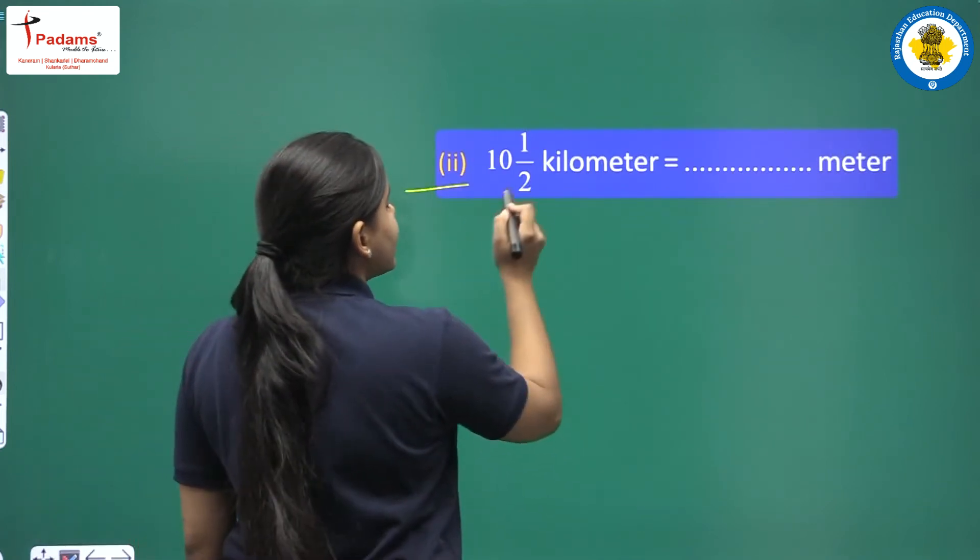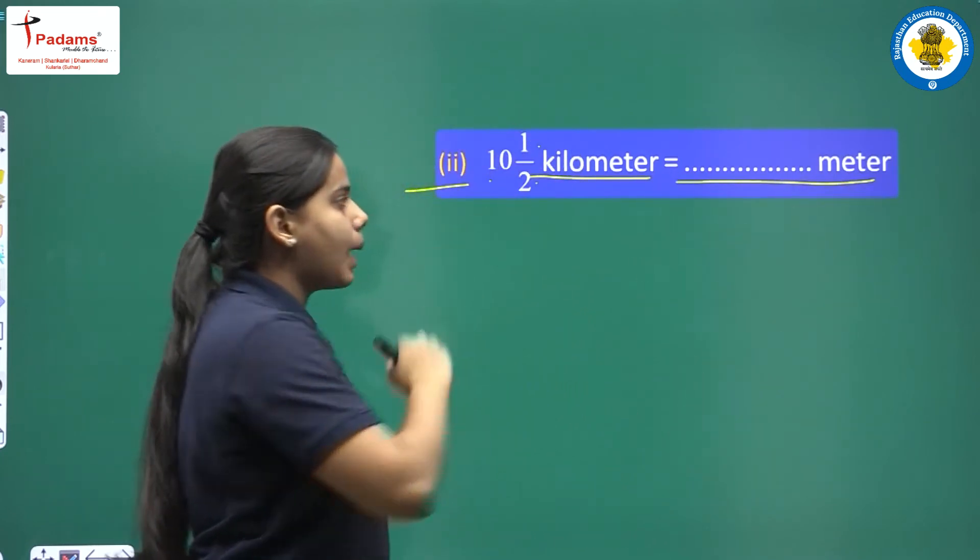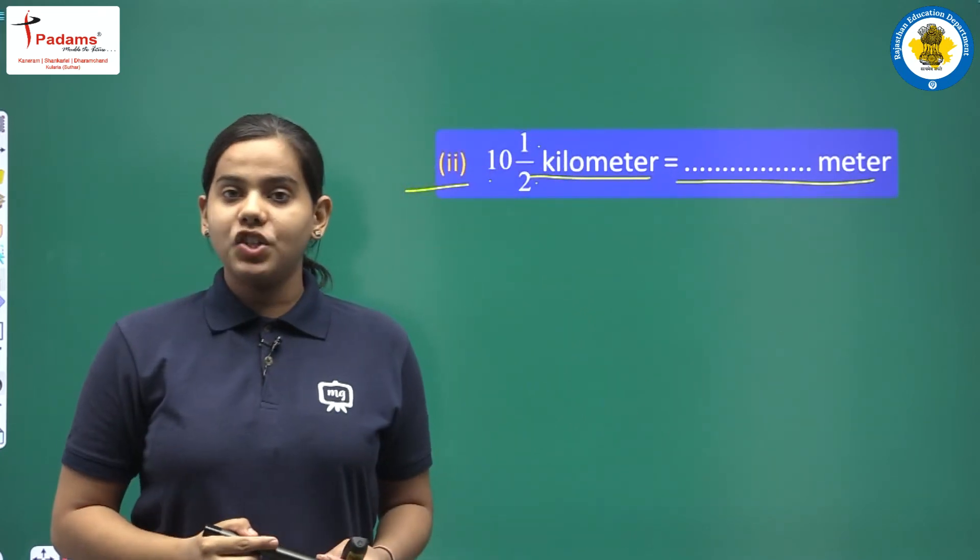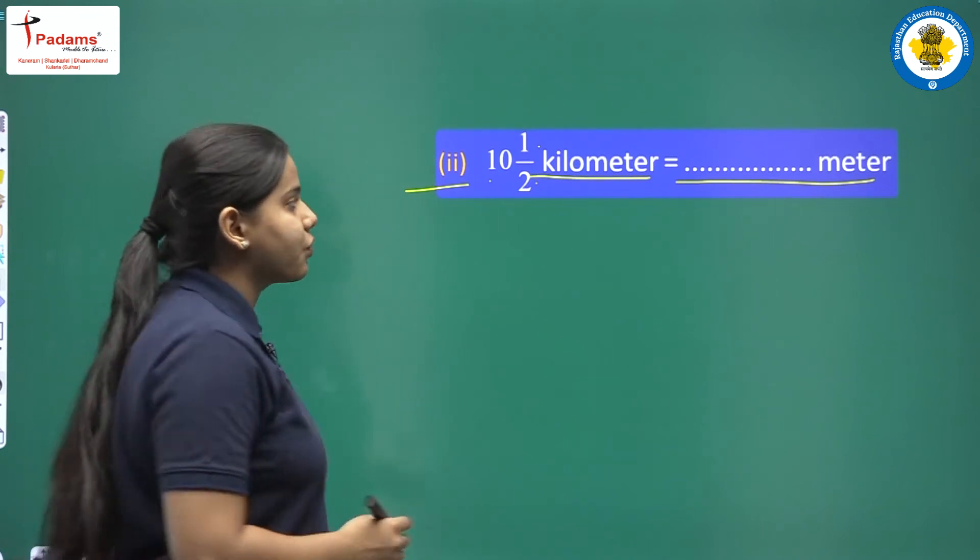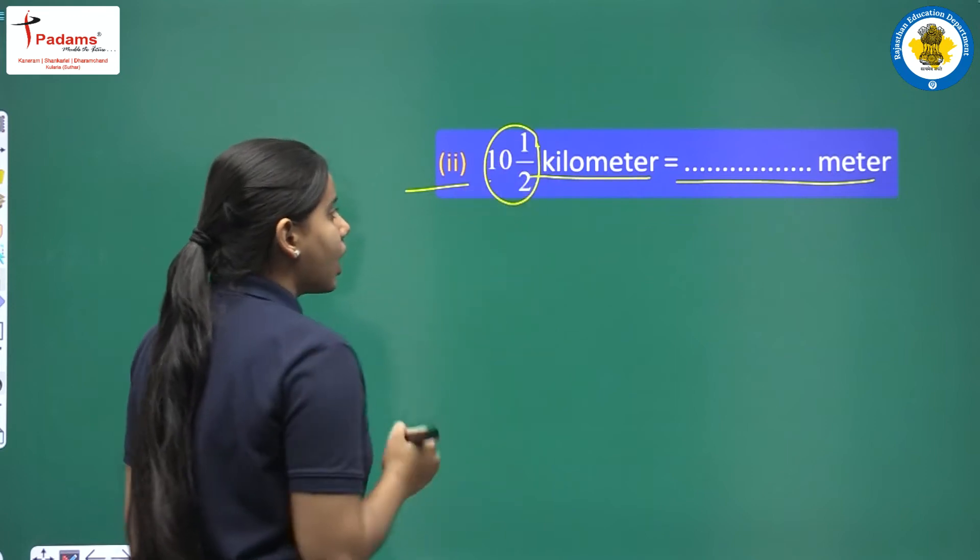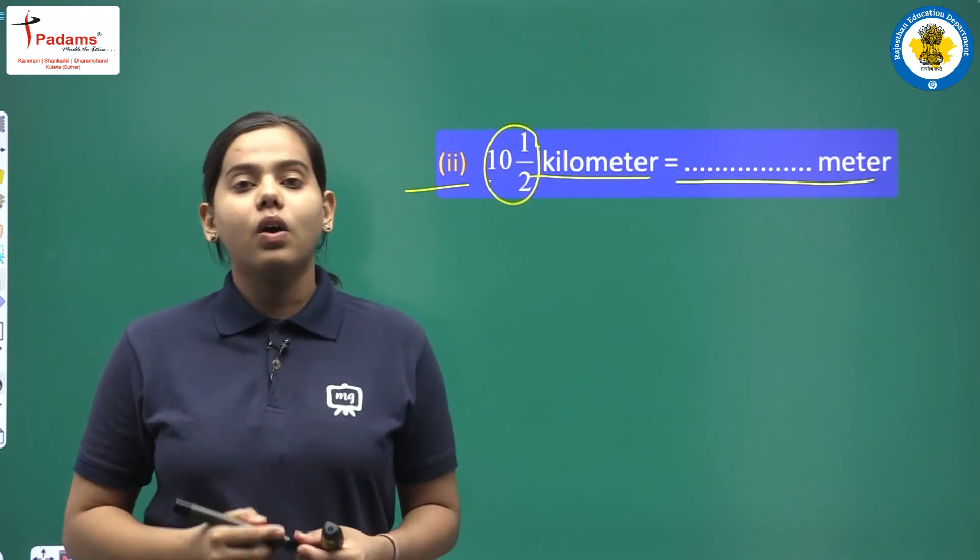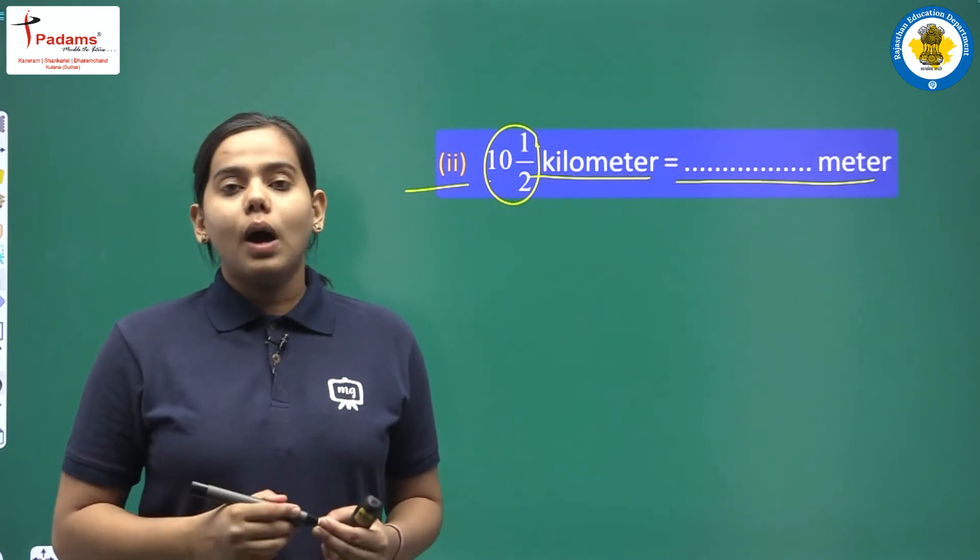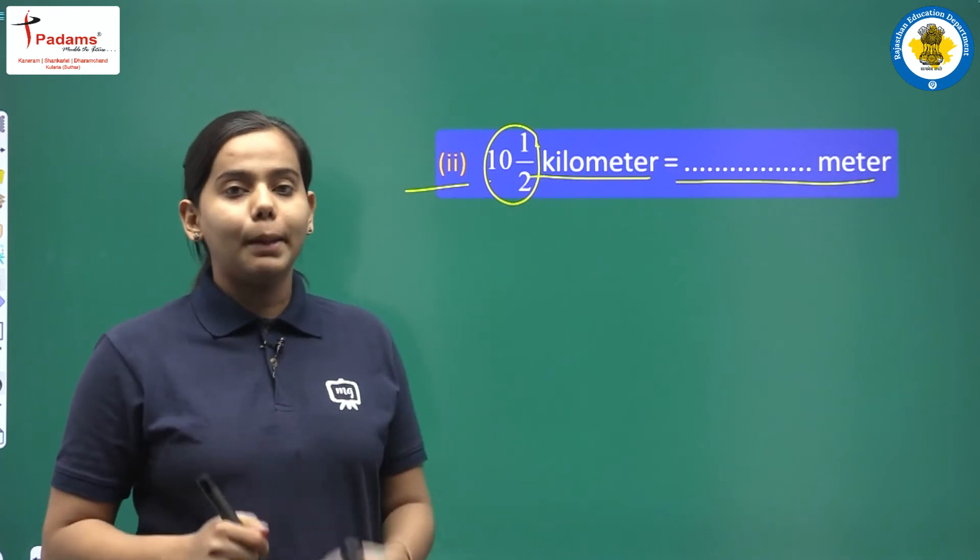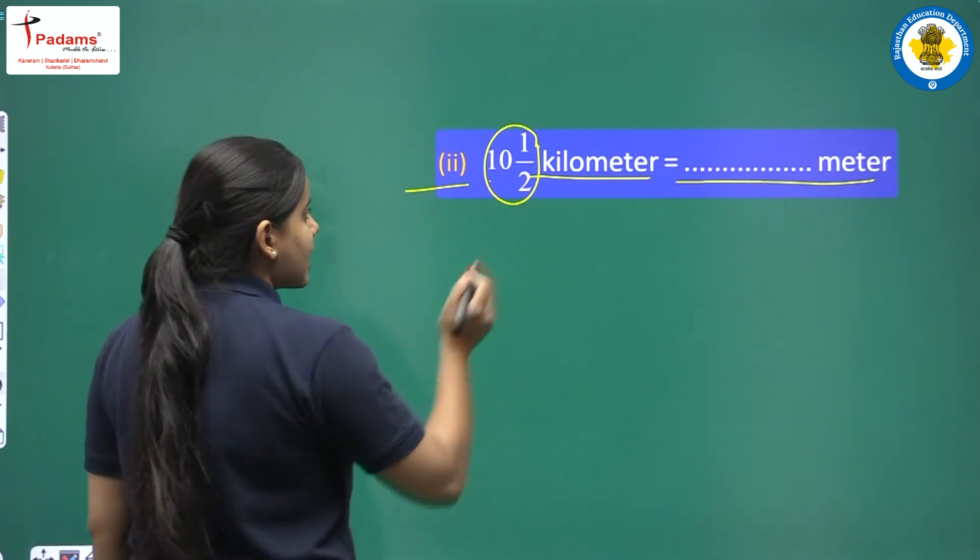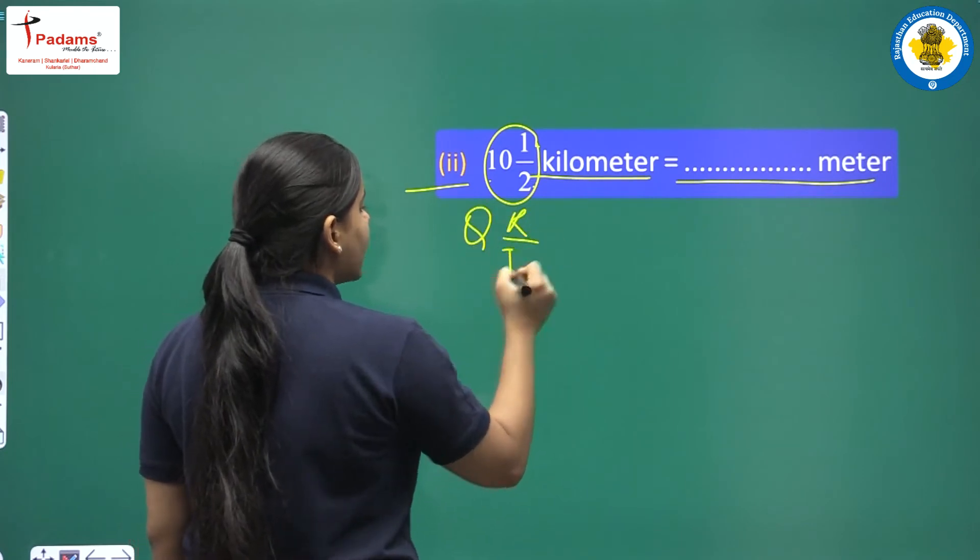Let's solve the next question. Question number 2 is 10 whole 1 upon 2 kilometer equals dash meters. Here we have to change kilometers here. But the kilometers are given to us in mixed fraction. Look, this mixed fraction is given. We have to convert from mixed fraction to improper fraction. Look, how do we convert here? So we have to multiply here in quotient, remainder and divisor. You know it. Question, remainder and divisor. First of all, we multiply them.